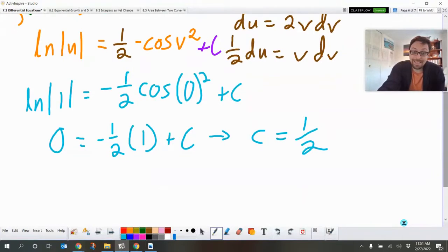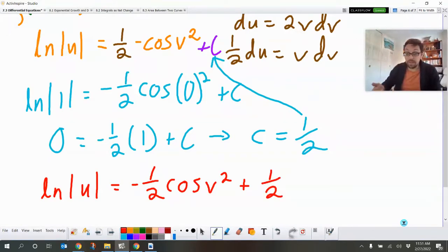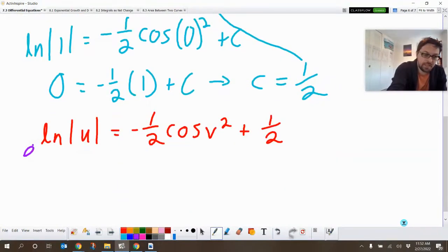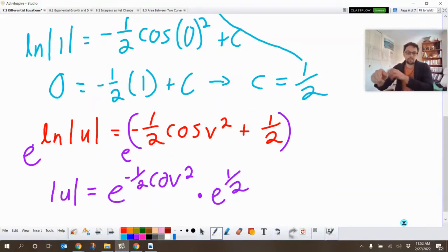Now we can bring that c up into this and then we can actually solve for u. So let's rewrite all that. So we get the ln of the absolute value of u equals negative one-half cosine v squared plus one-half. Now, to get rid of that ln, we make it an exponent on an e. So this is e to the ln of u and e to all that stuff. Over here, we've got the absolute value of u because that e and the ln cancel each other out. Then we've got e to the negative one-half cosine v squared multiplied by an e to the one-half.